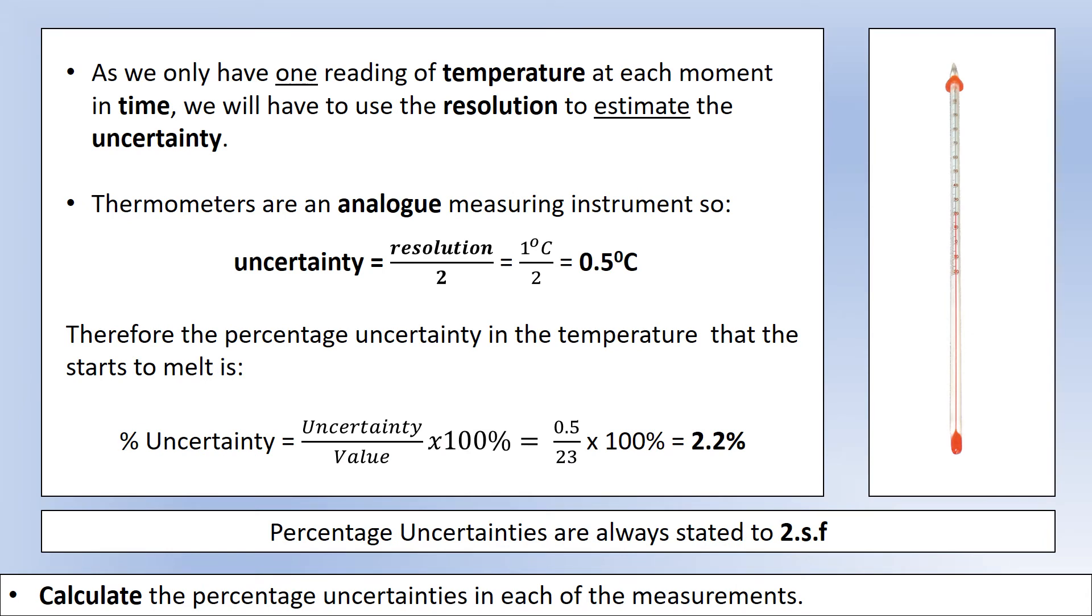At each moment in time, we only had one temperature measurement. So to get an estimate of the uncertainty, we're going to use half the resolution. The resolution is one degree. So that gives us an uncertainty in each temperature measurement of 0.5 degrees. If we want a percentage uncertainty in the temperature when it starts to melt, in this case from the table you saw it was 23 degrees. In reality, it would probably be about 65 degrees for stearic acid. But this would be the percentage uncertainty in that temperature reading. So 2.2%. Not too bad, but a fair amount of uncertainty there.